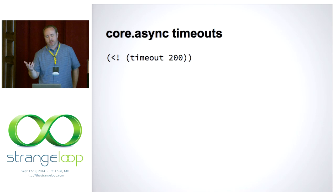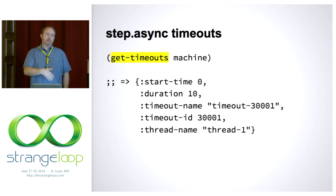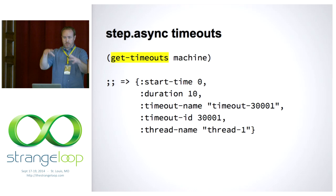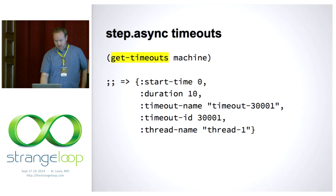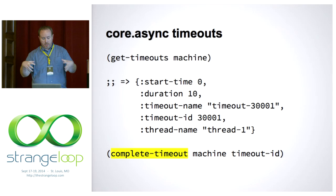Another source of non-determinism are timeouts. If you call timeout 200, it makes a channel which after 200 milliseconds will produce a nil value — you can treat timeouts like channels, but it's another source of non-determinism since you don't know the exact sequence in which timeouts will fire. The way step async handles that is none of the timeouts in your code ever fire unless someone tells it to fire. Externally you can ask the step machine for all the timeouts and it gives you a data structure, then you can programmatically call into the step machine to fire a specific timeout, giving you control of that source of non-determinism.